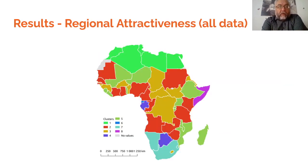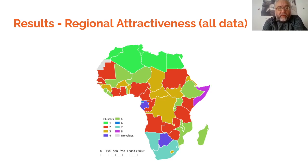This is our final map showing clusters for regional attractiveness calculated from all input data. You can see significant spatial patterns in the north, south, and central or sub-Saharan parts of Africa. These clusters correspond with the traditional division of African countries. There are also several solitaires or very specific countries such as Somalia or Equatorial Guinea.